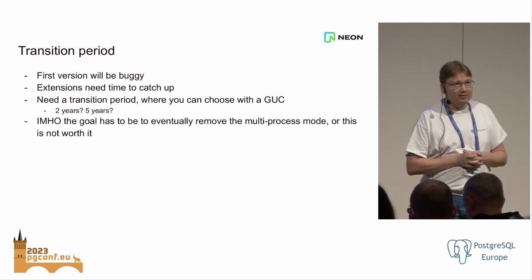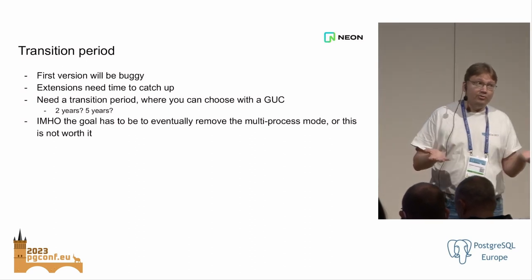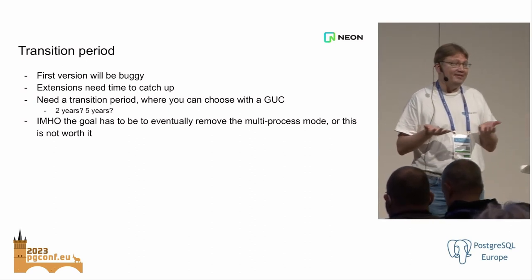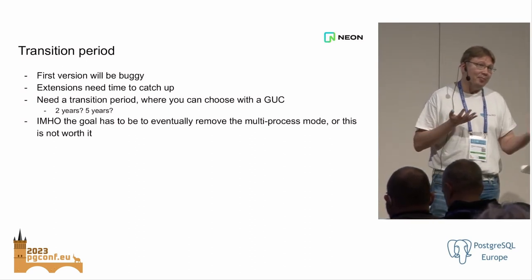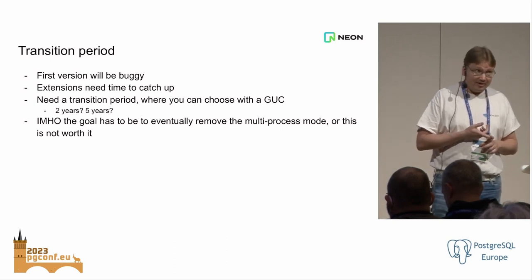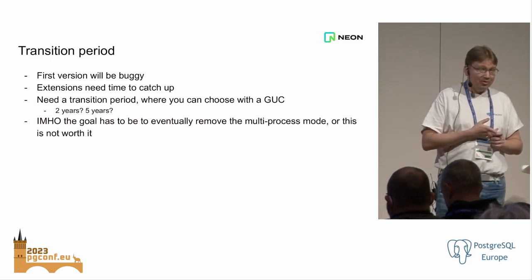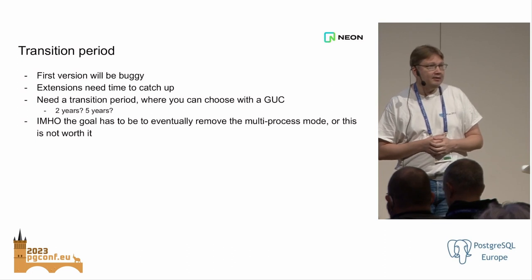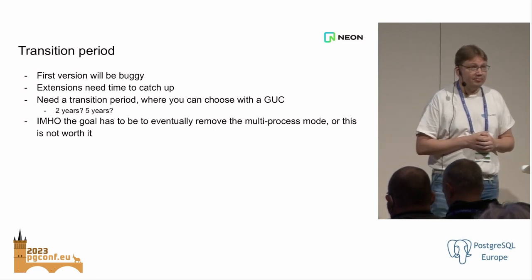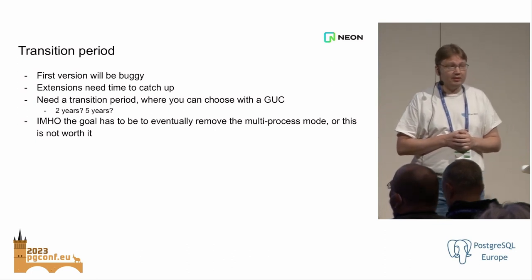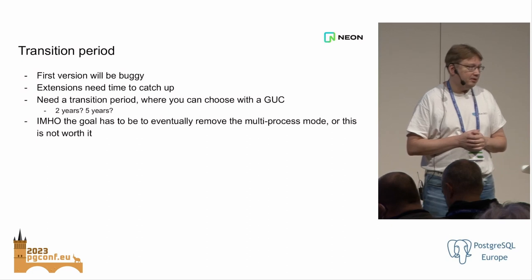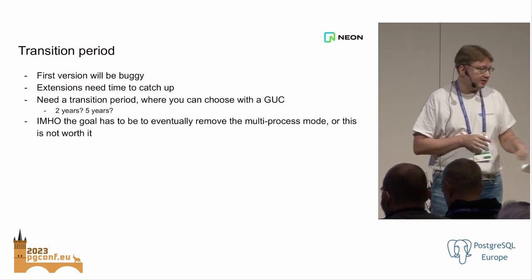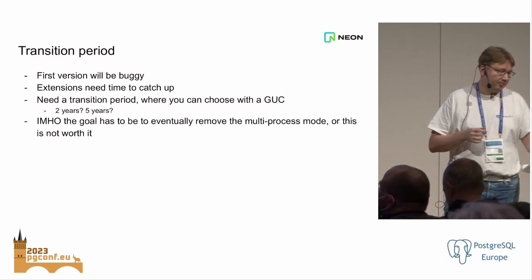Because I think the goal has to be to get rid of the multiprocess model. If we end up in a situation where we have both, I think that's the worst case scenario. I really don't want to deal with the complexities of both shared memory in multiple processes and also multi-threading. So we need to keep this transition period as short as possible. Or, if we can't get to that, I don't think this is worthwhile — we won't get the benefits.